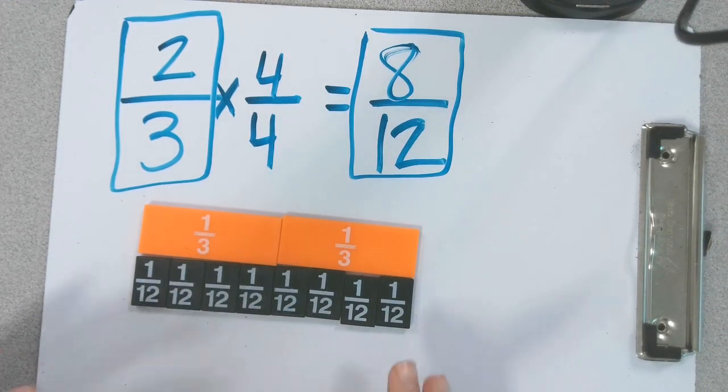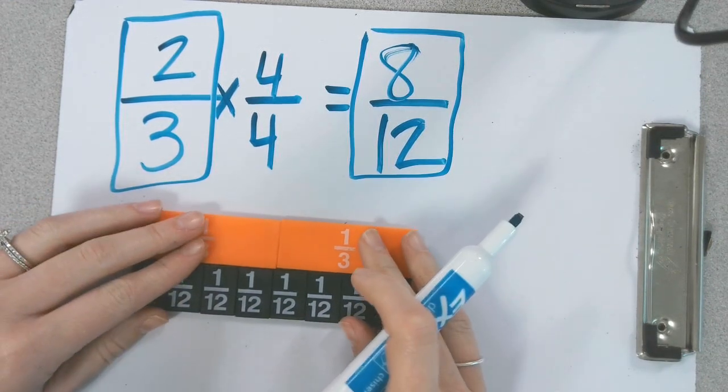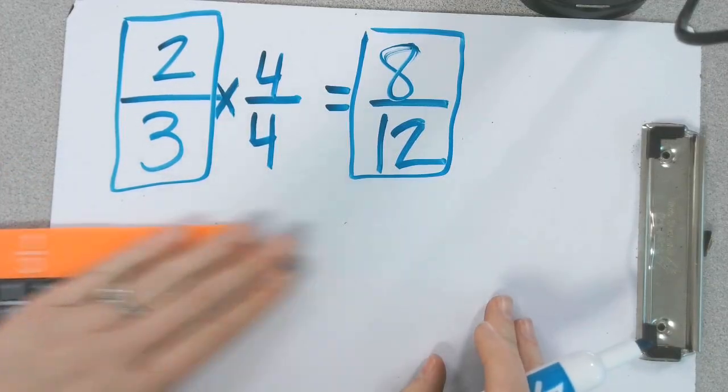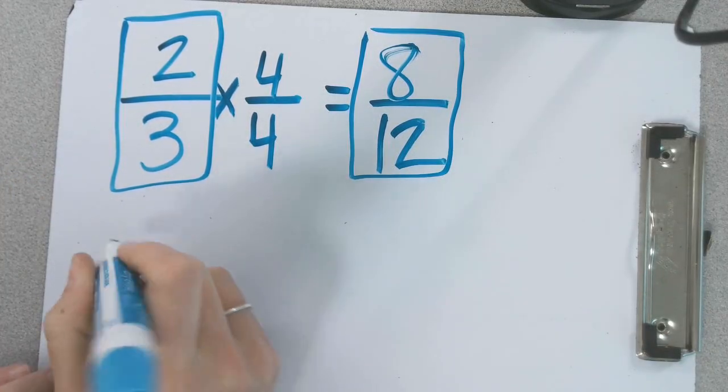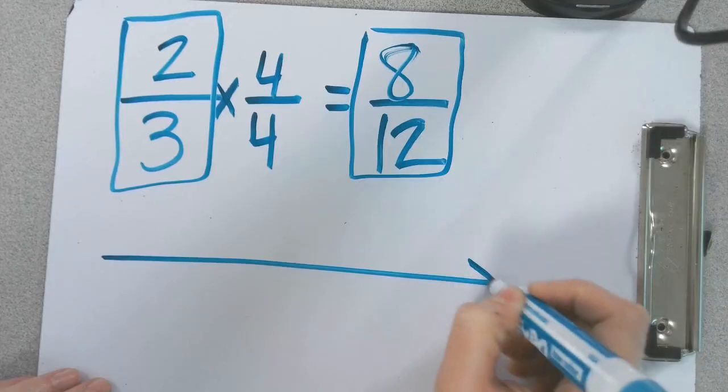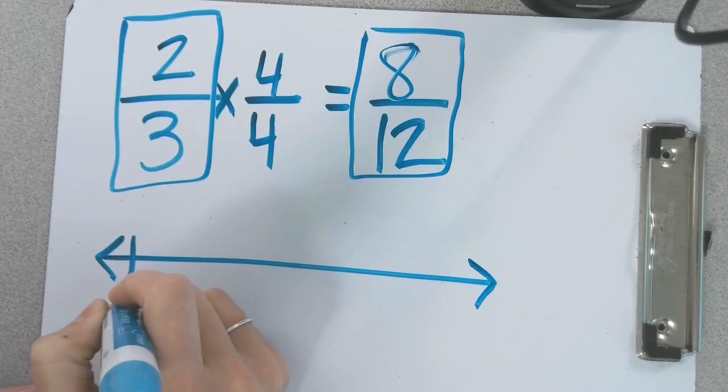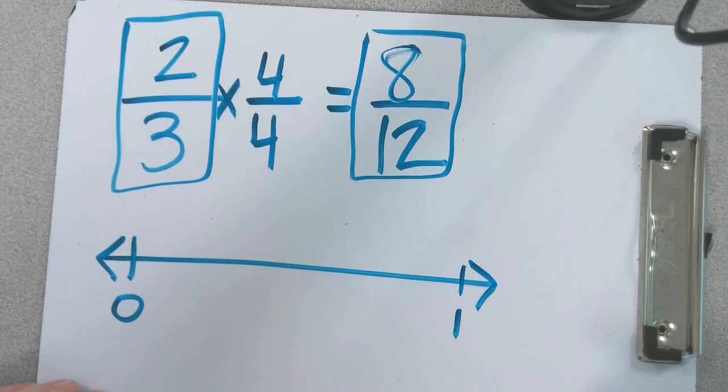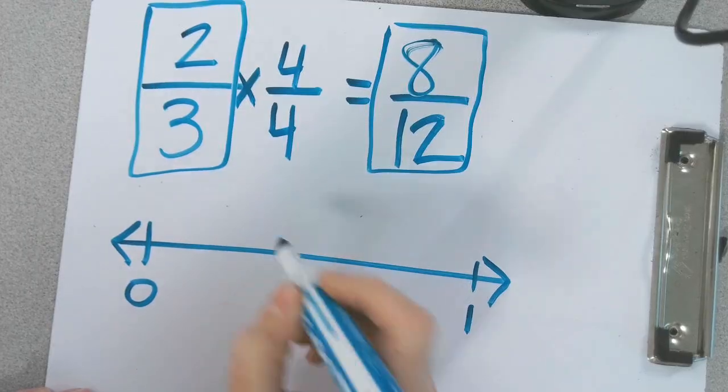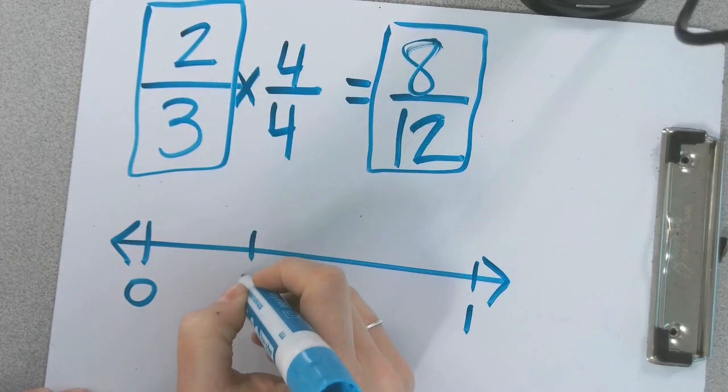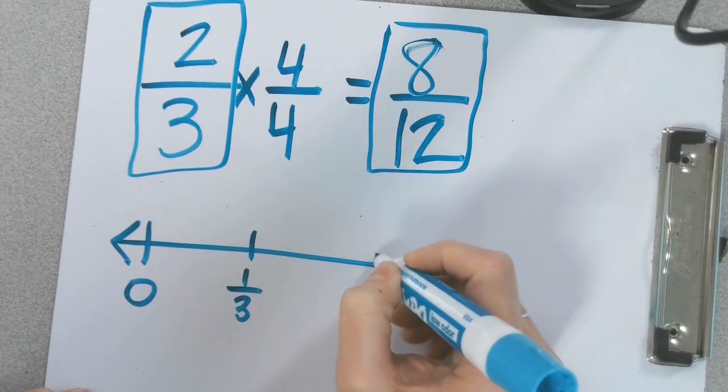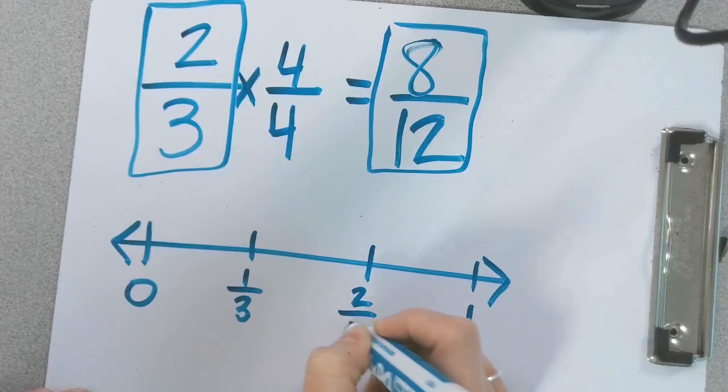So we can use a set or an area model. This is fraction strips. But I can also use a number line. So I'm going to make a number line from 0 to 1 whole. And I'm going to divide it into 2 thirds. There's 1 third. And there's 2 thirds.